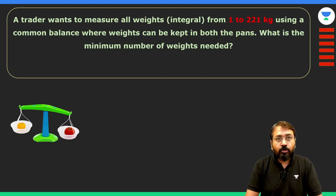I mean you can also keep on both sides. What is the minimum number of weights needed to measure all the weights from 1 to 221 kg?